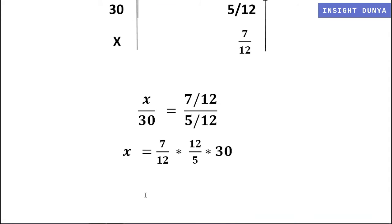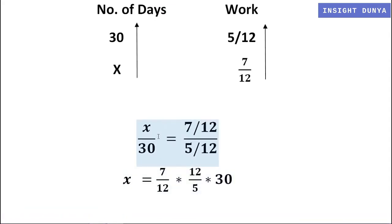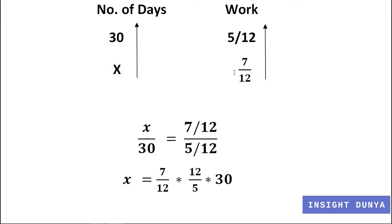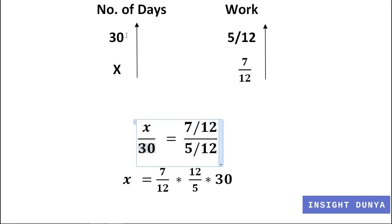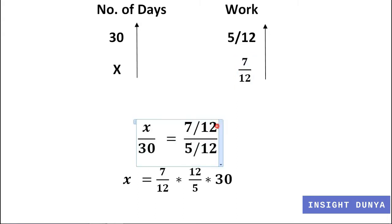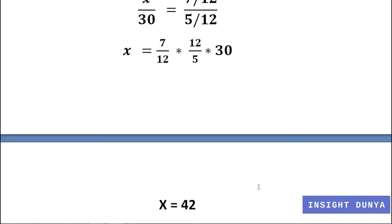Since the two quantities are directly proportional, the lower values will be the numerator for both. So x is the numerator and 30 is the denominator on the days side, and 7 over 12 is the numerator and 5 over 12 is the denominator on the work side. Therefore x equals 7 over 12 multiplied by 12 over 5 multiplied by 30, and finally x equals 42.